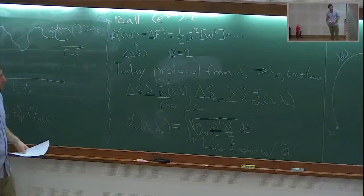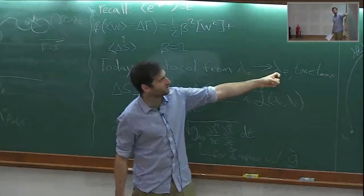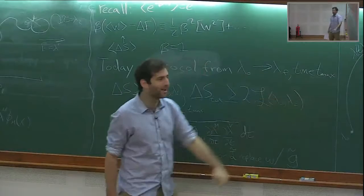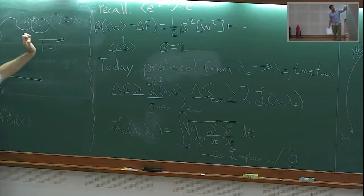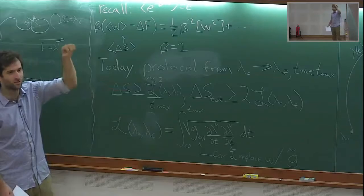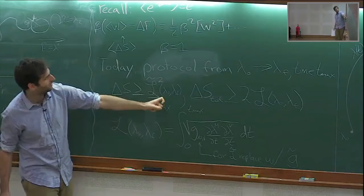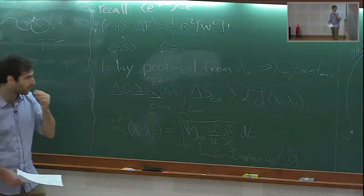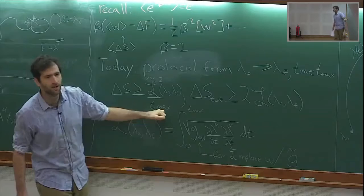Very soon I'm going to be switching to β = 1. Today the idea is we're going to be thinking about protocols that start from λ₀ and go to λ_F. I need to move from some initial conditions to some final conditions and I'm allowed to take any trajectory, but I need to get there in some time T_max. I'm first going to tell you about a bound: as I move my control parameters, allowing the microscopic state of the system to do whatever it does, I'm going to need to produce at least this much entropy, where L̃ is going to be the geodesic distance in a geometric space we're going to derive shortly.